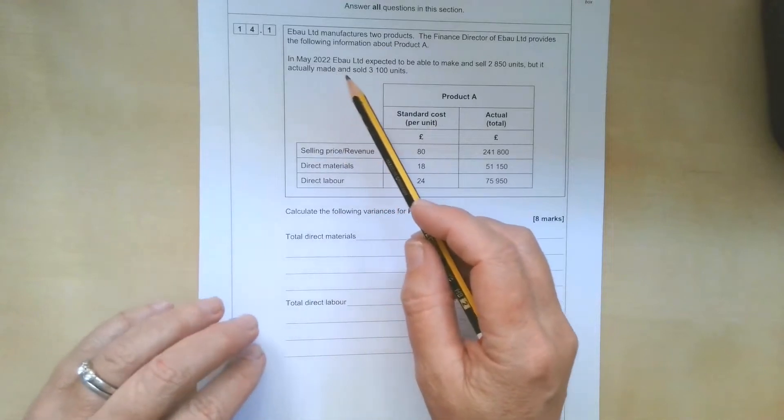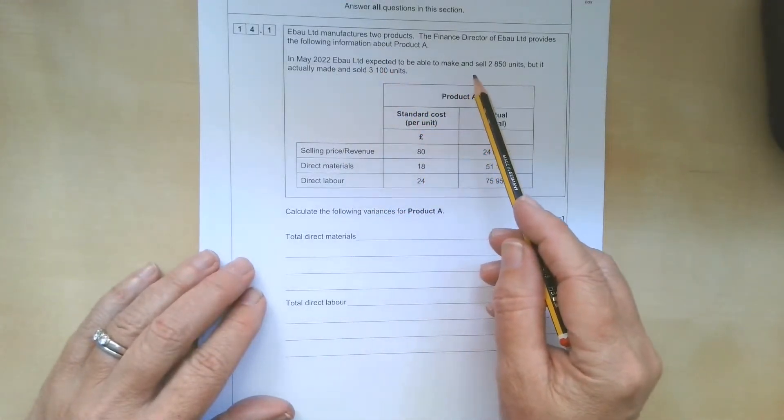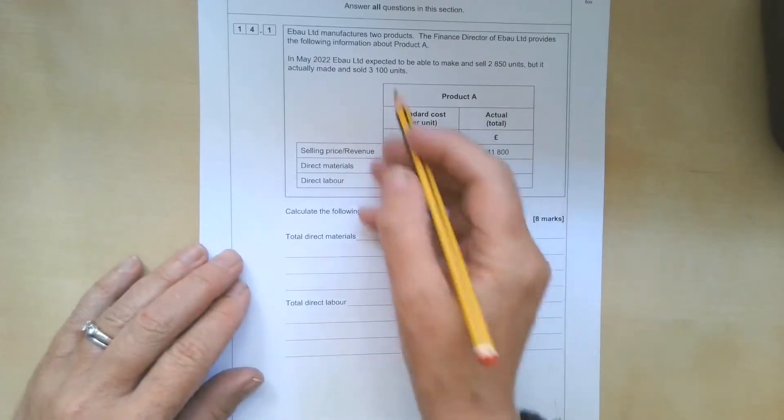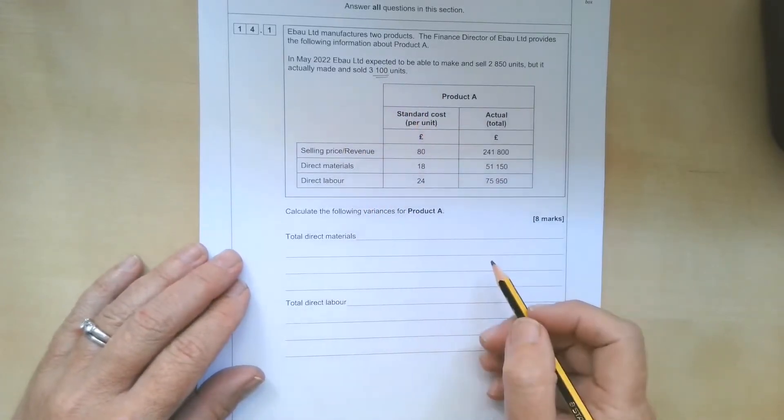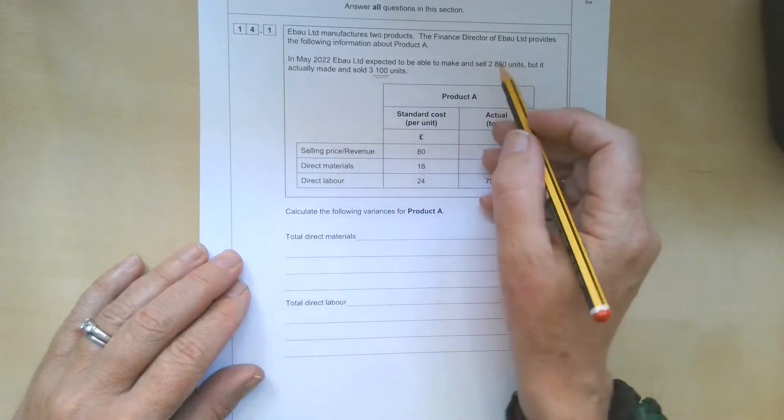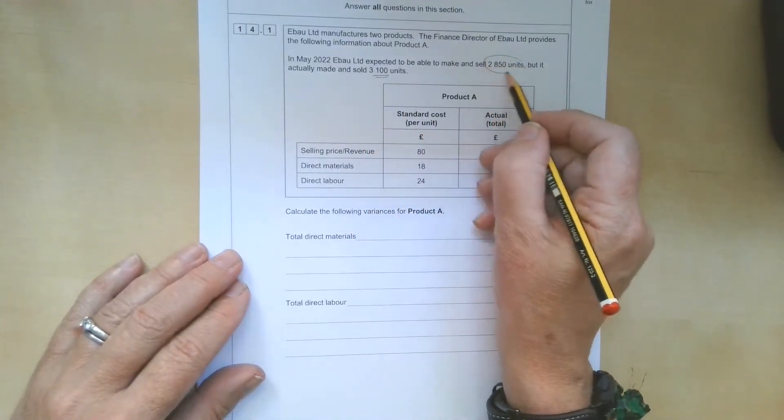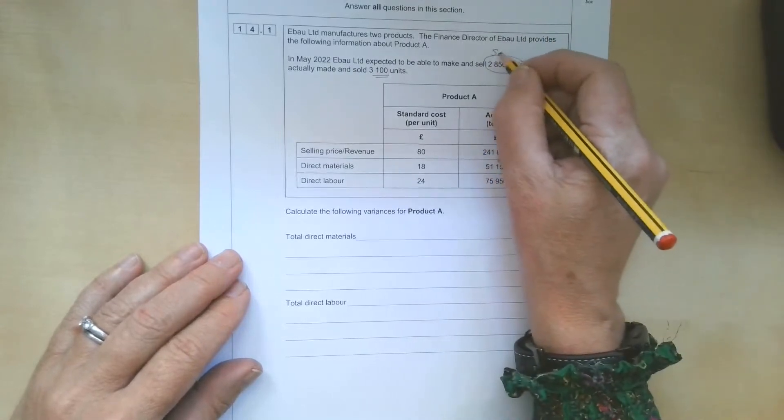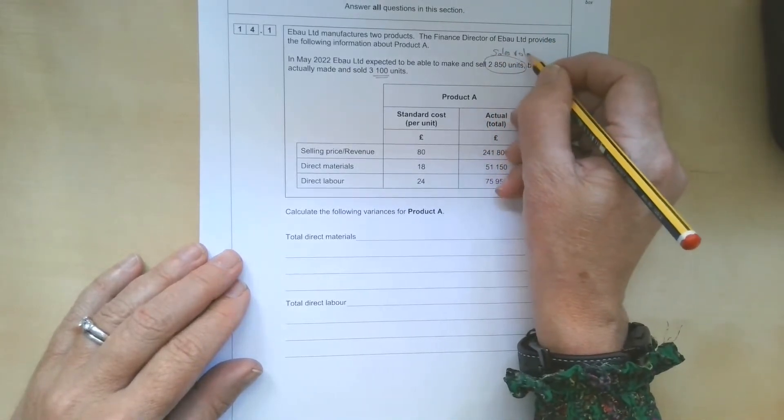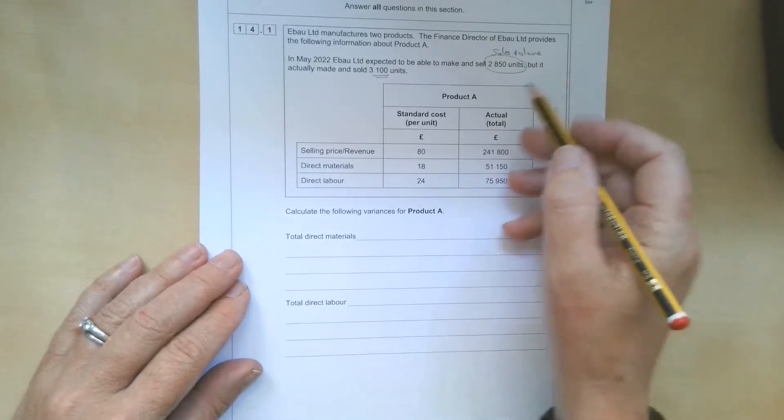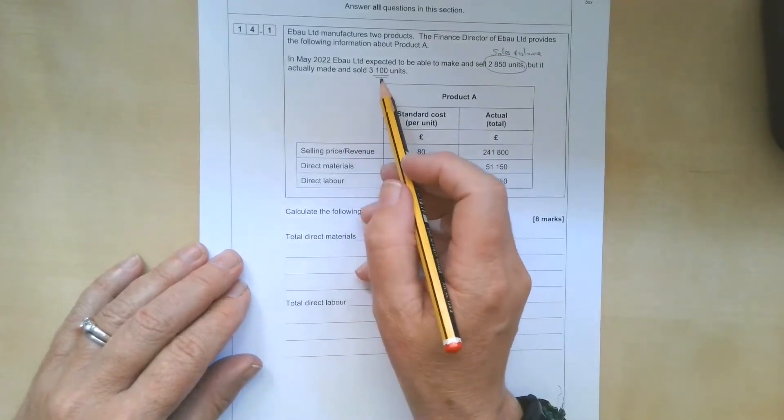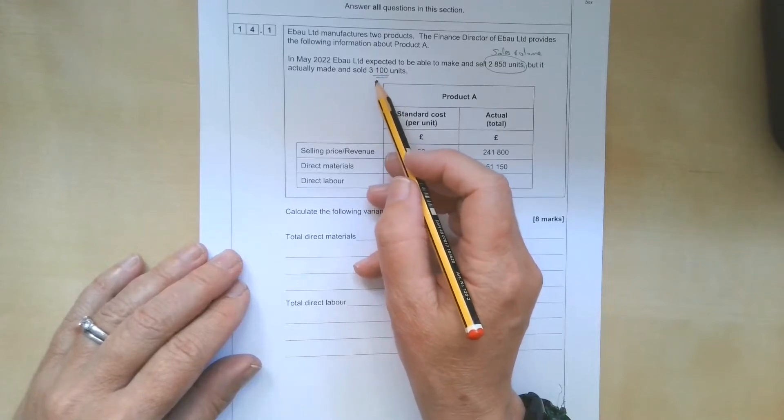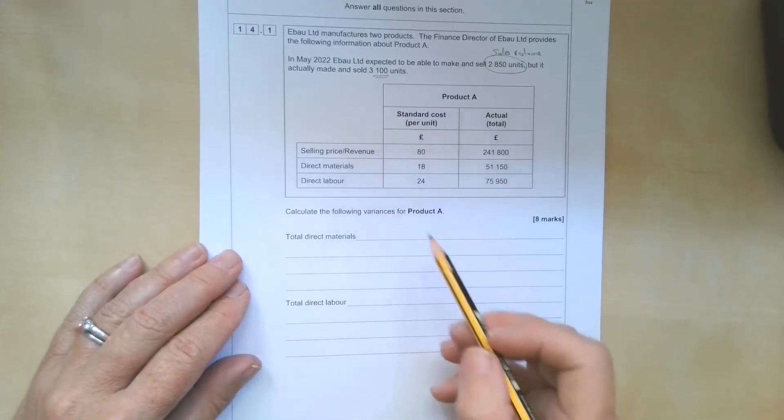In May 2022, they expected to be able to make and sell 2,850 units, but actually made and sold 3,100 units. So that's the actual output. Now be careful with this one. This is the forecast level of output. The only time you really need that when we're doing variance analysis is for the sales volume variance. We don't need it for regular variances. All our materials, quantities, and labour hours are going to be based on the number of units we actually made and sold.